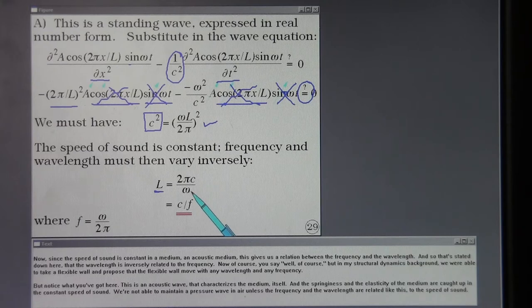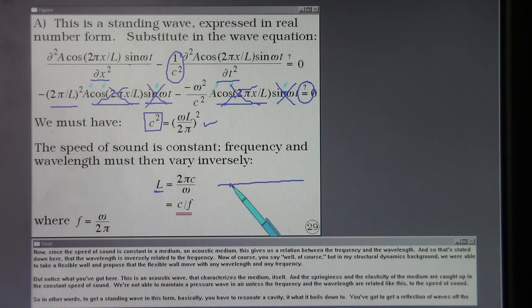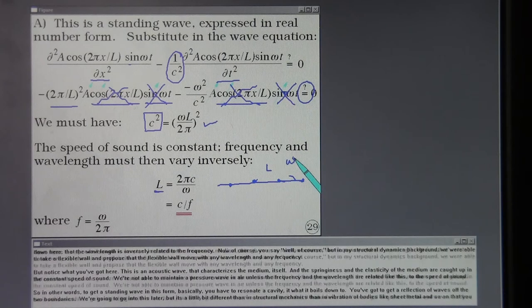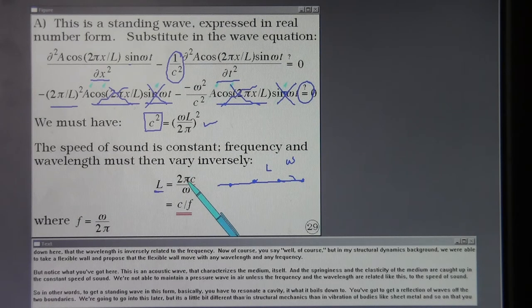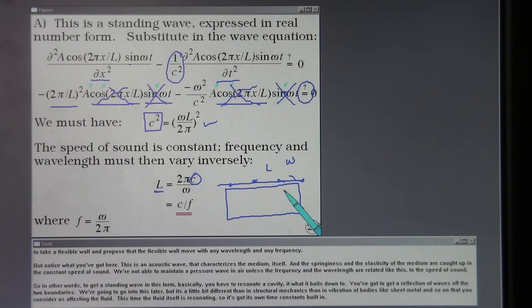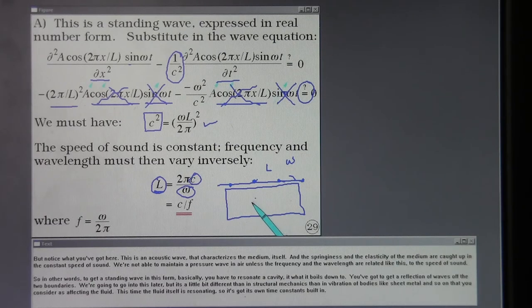Now, of course you say, well of course. But in my structural dynamics background, we were able to take a flexible wall and propose that the flexible wall move with any wavelength and any frequency. But notice what you've got here. This is an acoustic wave that characterizes the medium itself. And the springiness and the elasticity of the medium are caught up in the constant speed of sound. We're not able to maintain a pressure wave in air unless the frequency and the wavelength are related like this to the speed of sound.